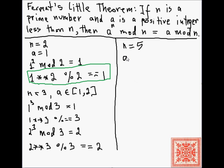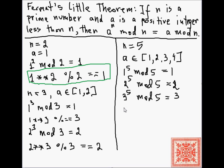So a couple more examples. n equals 5. Then a can be 1, 2, 3, or 4. So we can check this. 1 to the 5th modulo 5 is equal to 1. 2 to the 5th modulo 5 is equal to 2. 3 to the 5th modulo 5 is equal to 3. 4 to the 5 modulo 5 is equal to 4.